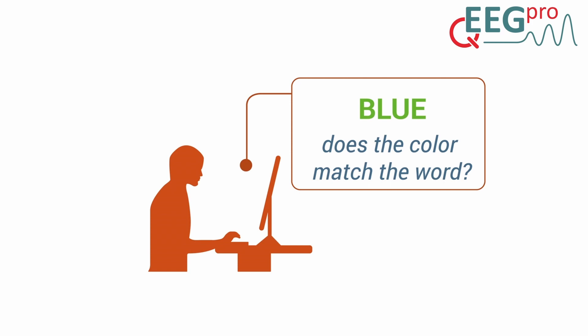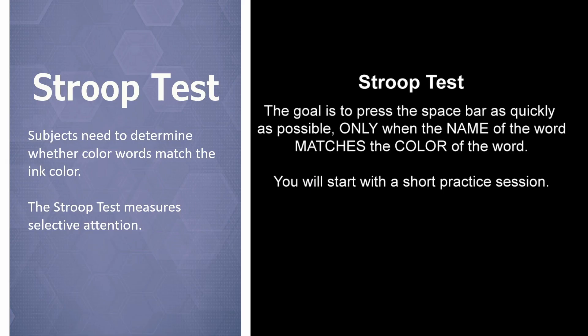Subjects generally show slower reaction times for trials in the incongruent condition in comparison with the congruent condition. The Stroop Test measures selective attention and research shows that ADHD, TBI, and schizophrenia are associated with impaired performance on this test. Let's have a look at the Stroop Test in action. Here's the instruction screen for the practice session of phase two, where subjects need to press a button only for congruent trials.